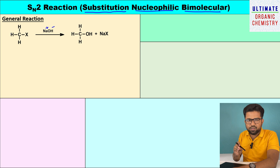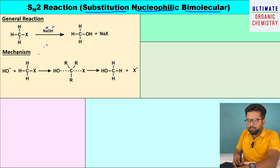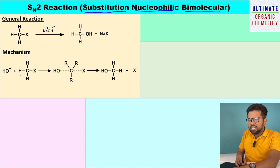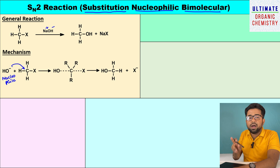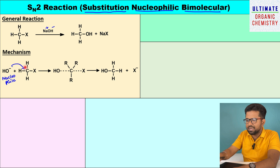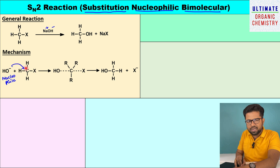Now let me explain the SN2 reaction with a detailed mechanism. I have taken OH⁻ here — we know that OH⁻ is acting as a nucleophile. This nucleophile tries to approach the carbon atom from the back side relative to the leaving group. That means if the leaving group is present on the right-hand side, the nucleophile has to approach from the left-hand side.